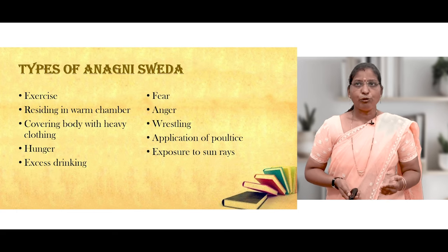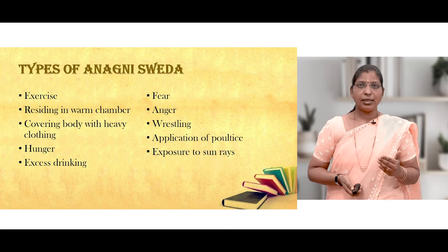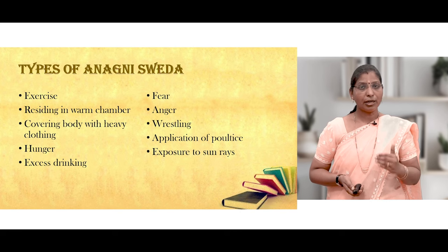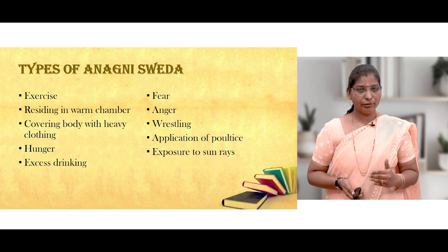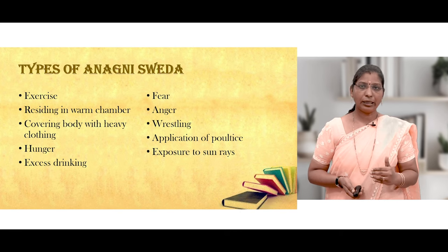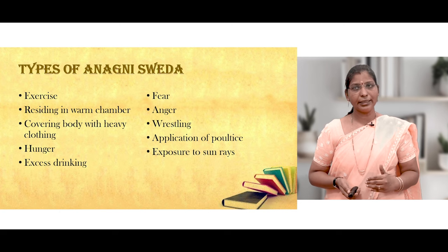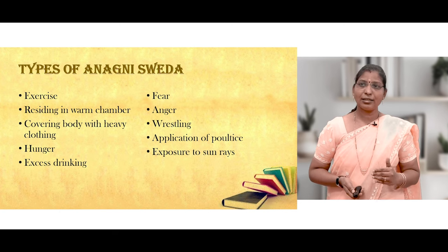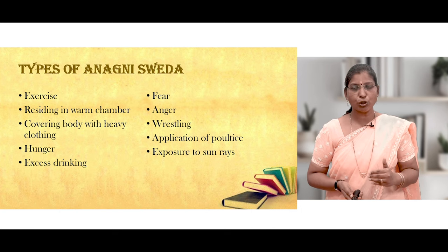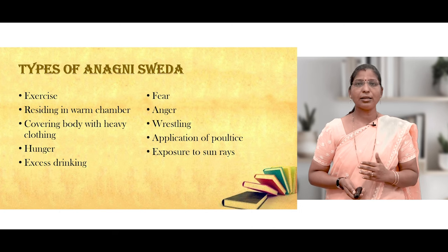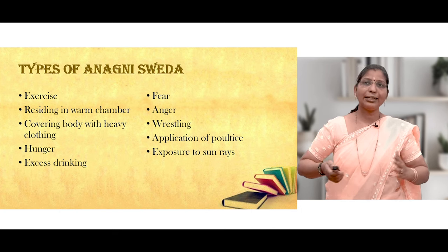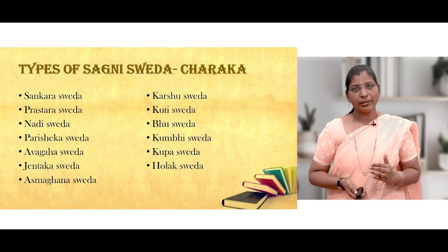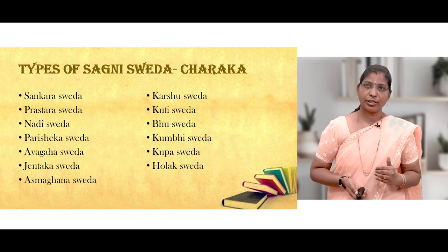Types of Anagnisweda include: exercise, residing in a chamber, warm chamber, covering body with heavy clothing, hunger, excessive drinking, fear, anger, wrestling, application of poultices, and exposure to sun rays. These are the 10 types of Anagnisweda described by Ashtangahrudaya and Charaka.